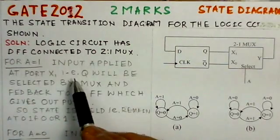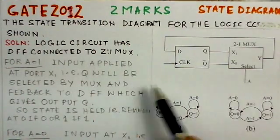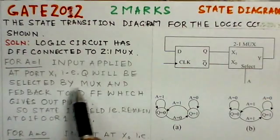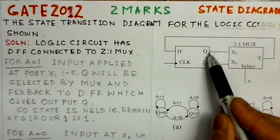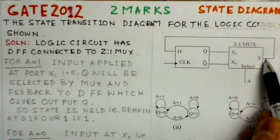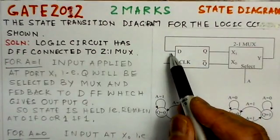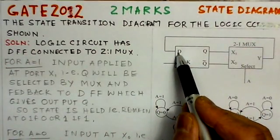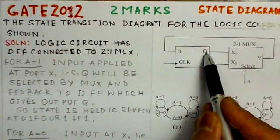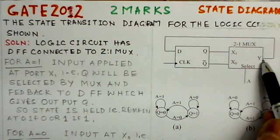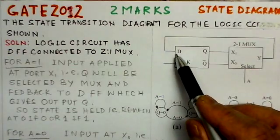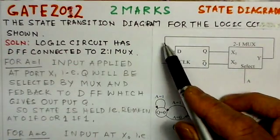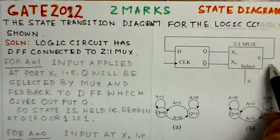When A is 1, the input at port X1, that is Q, will be selected by the multiplexer and come to the output Y. This is then fed back to the D flip-flop. With the clock, the D input appears at the output — so whatever the state of Q is, if D is 0 it will be held at 0, and if it is 1 it will be held at 1.